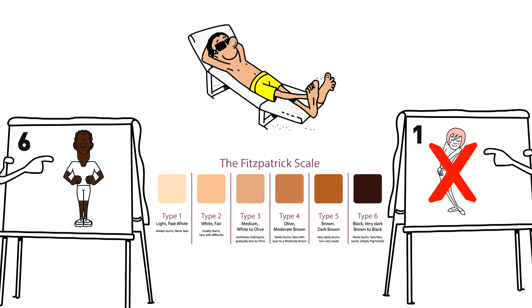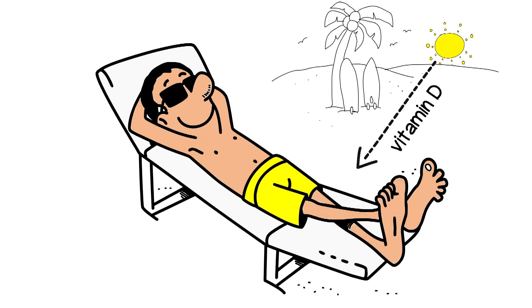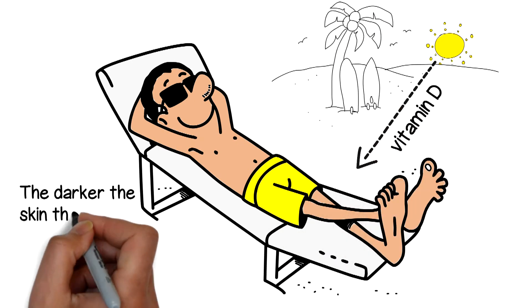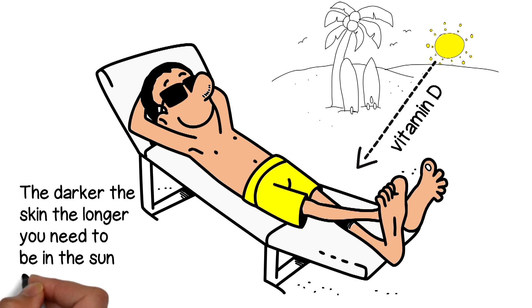If you're a skin type 2 or higher, your skin can develop a suntan while you make vitamin D. The darker the skin, the longer you need to be in the sun to make vitamin D.